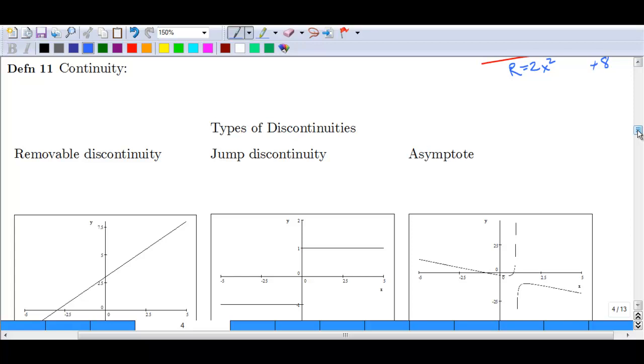So if we think of continuity, continuous graphs are graphs in which we can draw the entire picture without lifting up the pencil. And we need three things to be true in order for a function to be continuous at any point.